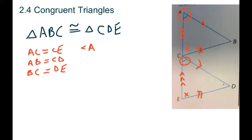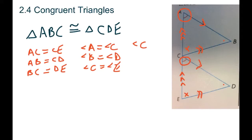All the different sides are the same, plus all the different angles are the same. Angle A equals angle C for the second triangle, angle B equals angle D, and angle C on the first equals angle E on the second. You could also write angle A as angle CAB — the line from C to A to B refers to that angle — but we'll keep it simple.